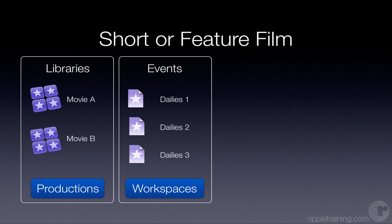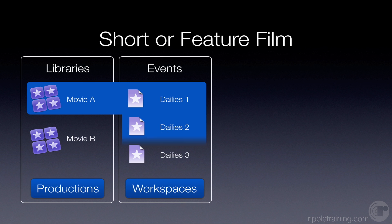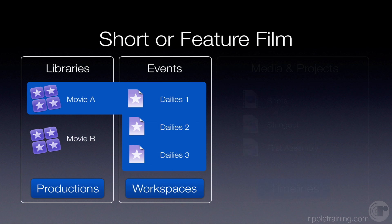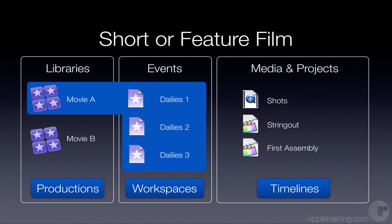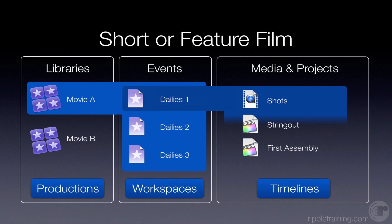As you can see here, if I go to the next slide, Movie A would contain three daily events — or as many as you needed — with a separate event for each day's shooting. Within each event itself, you'll have the individual shots that you've imported into that event, plus additional projects. The projects could be a string-out, a rough cut, a first assembly — essentially all the content you've put together in a timeline referencing media from those events.